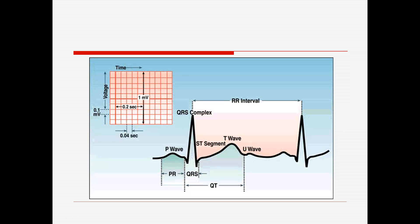Here is what a normal QRS complex looks like. We call it a QRS complex because it involves the ventricles. Notice right here we have a P wave — the P wave is when the atria contract. When you hear the lub-dub of your heartbeat, that first sound corresponds to the atria contracting, producing a small bump on the line called the P wave. The interval from the P wave to the start of the Q represents the electrical impulse moving down to the AV node.